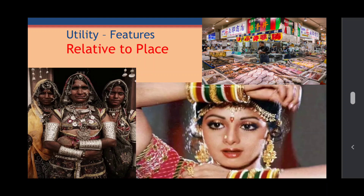Utility is relative to place. A given commodity may not have the same utility everywhere. You might have seen tribal women who wear a special variety of ornaments which give them immense satisfaction. But if you give the same ornaments to an urban lady, she might not get the same satisfaction. In Indian culture and tradition, Indian ladies have a great love for bangles and jewelry and feel very satisfied using them. But if you look at Hollywood actresses or European and American ladies, they do not wear such ornaments and jewelry, and those items do not give them the same satisfaction.